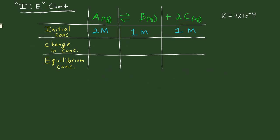So based on the reaction quotient calculation, this reaction is going to go in the forward direction. Therefore, the concentration of A is going to decrease by some value X. And since it's going forward, B and C are going to increase — B by plus X, and C by plus 2X, since we have two C's for every A and B in this reaction.